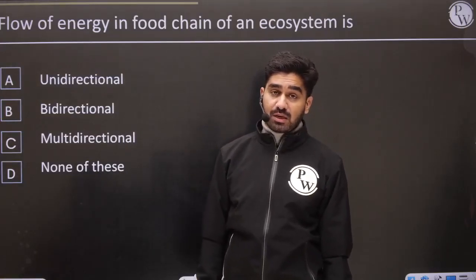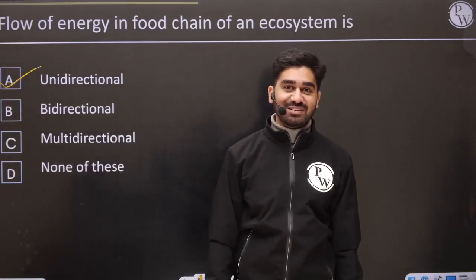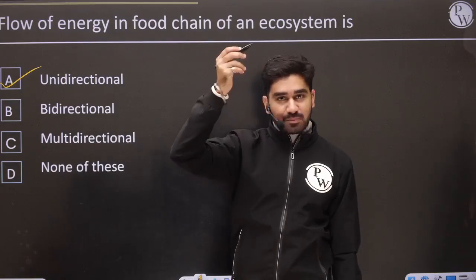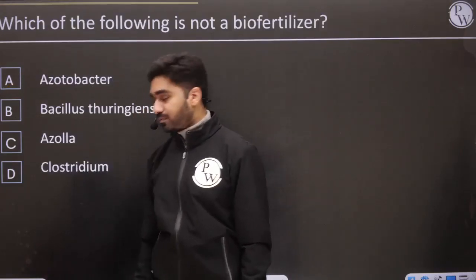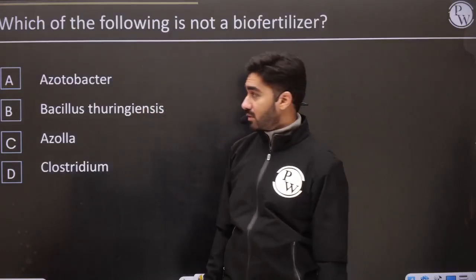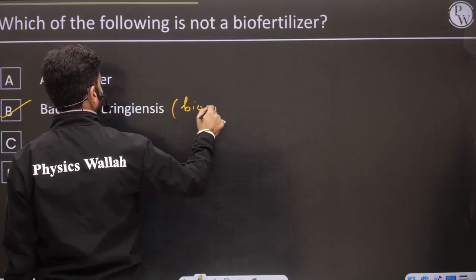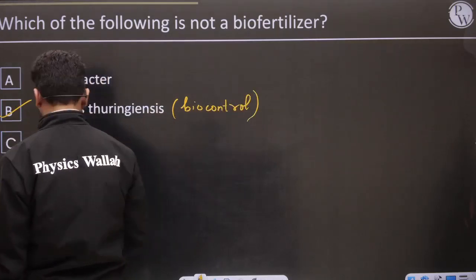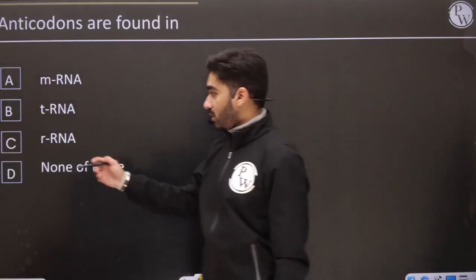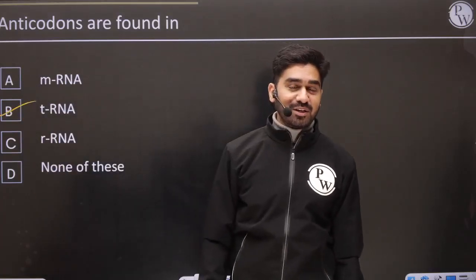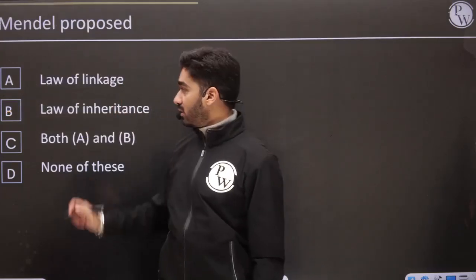Flow of energy in food chain — the flow of energy is essentially unidirectional. Sun's energy goes to plants. It doesn't go back to the sun. Plant energy goes to the primary consumer, then to the secondary consumer.